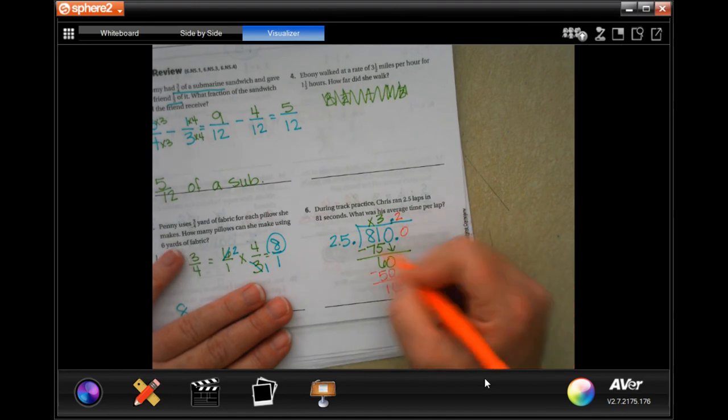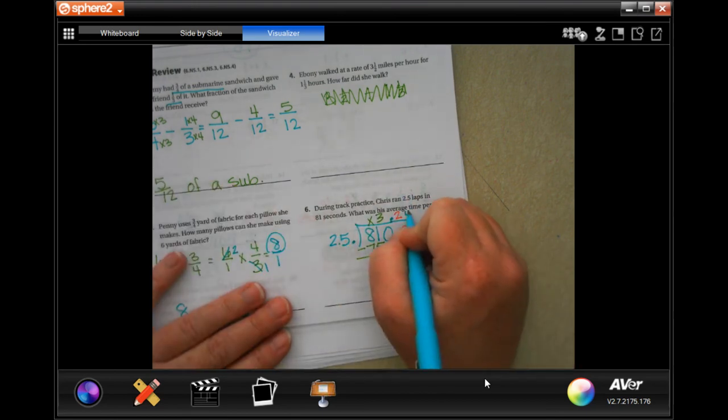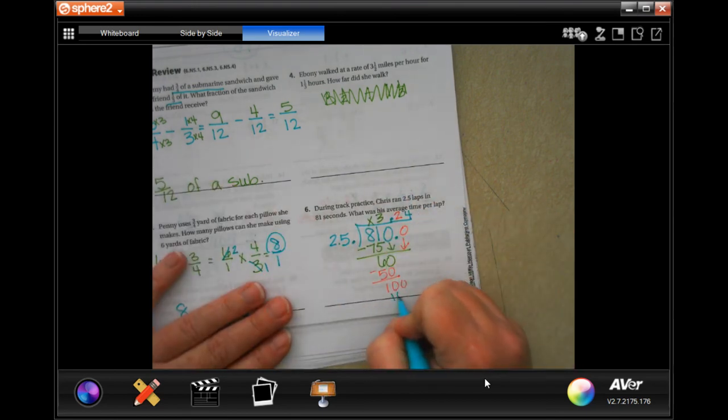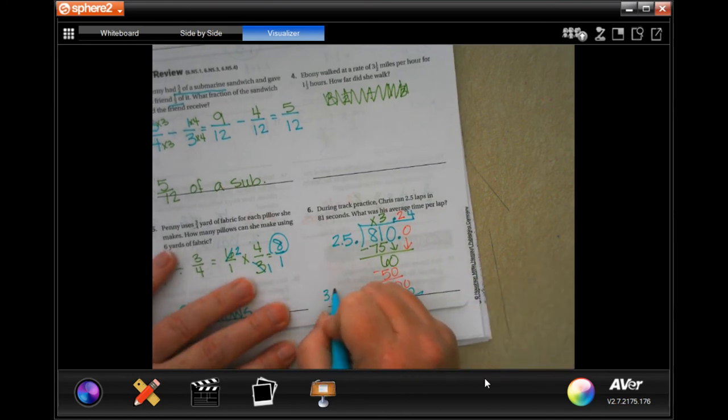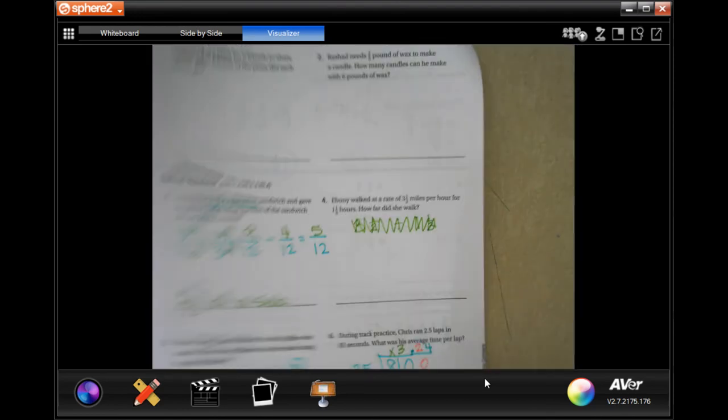Now 10 is less than 25. I can bring down another 0. And 25 is going to go into 100 four times, just like four quarters go into a dollar. 10 is less than 25. 3.24 seconds per lap. All right, guys.